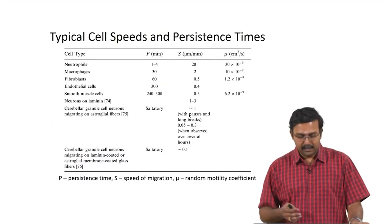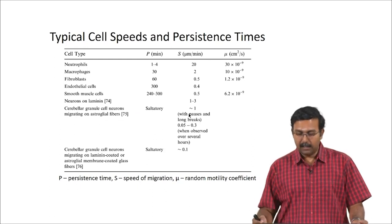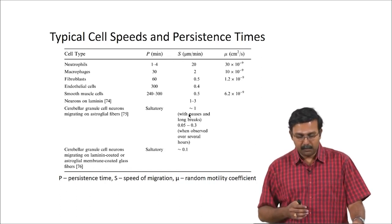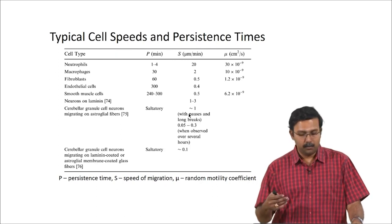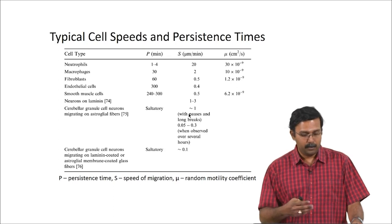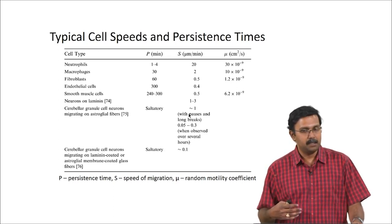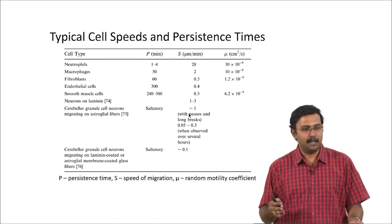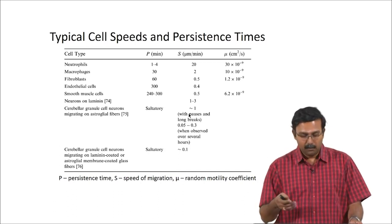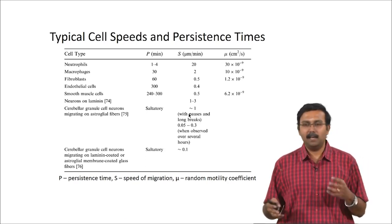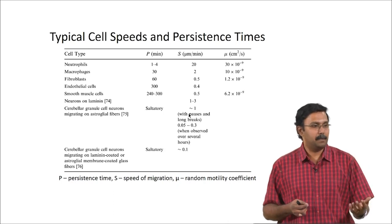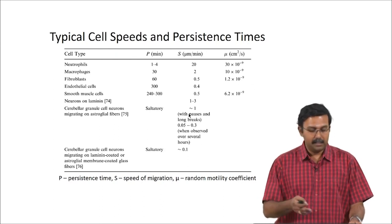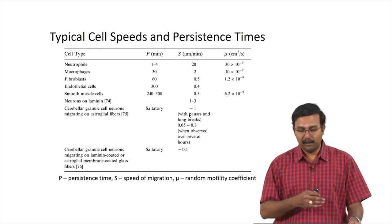Some cells and their persistence times, speeds, and motility coefficients: very motile cells like neutrophils or macrophages have lesser persistence times. Neutrophils have significantly lesser persistence times because they need to assess things in the region where they are — they cannot just keep moving in one direction. Endothelial cells are actually not as migratory, so they will have a much higher persistence time. Cells with lesser persistence times end up having higher speeds.